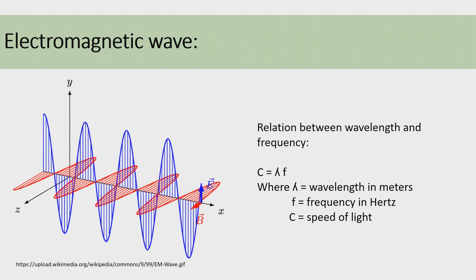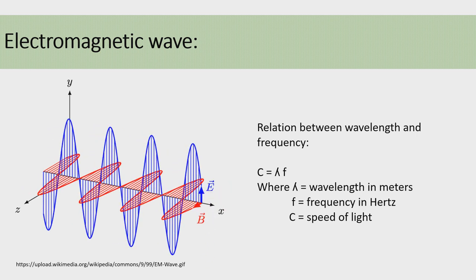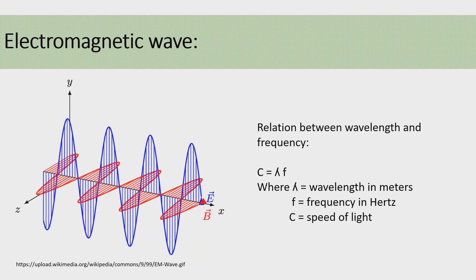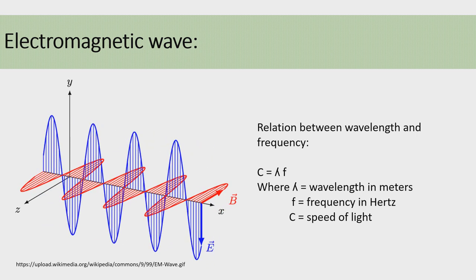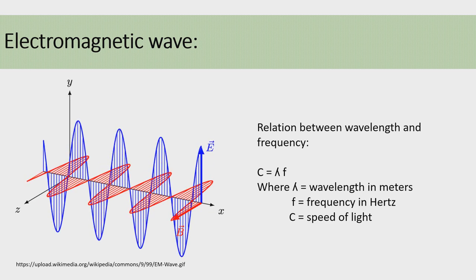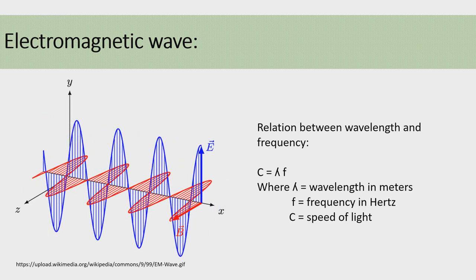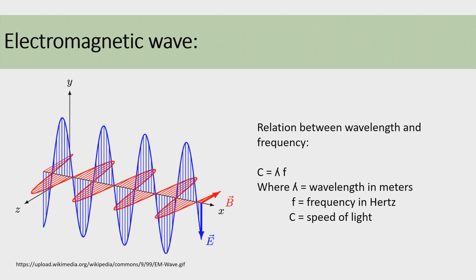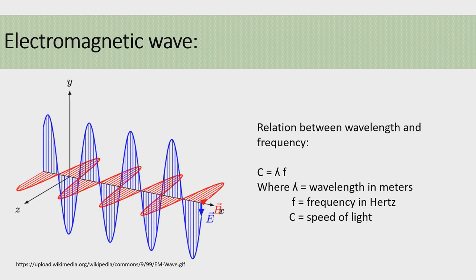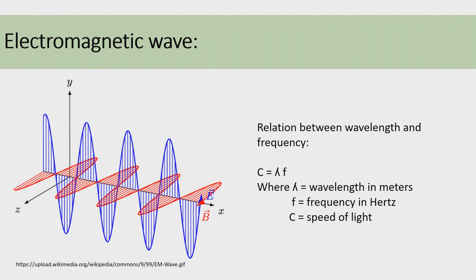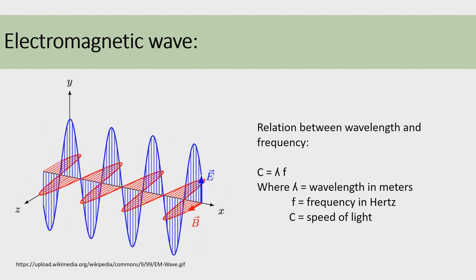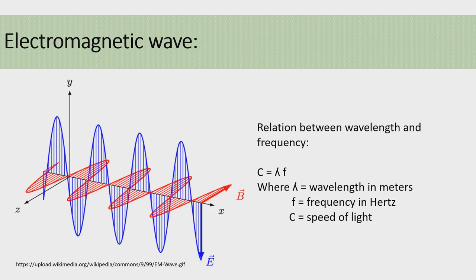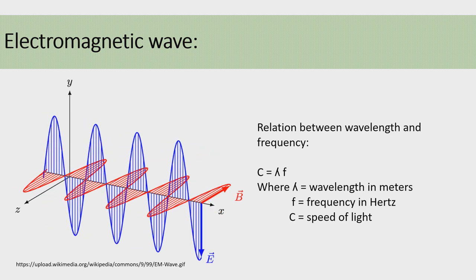These waves are signals that oscillate, as you can see. The amplitude of the electric and magnetic fields varies at a specific rate. The field intensities fluctuate up and down a given number of times per second, depending on frequency.